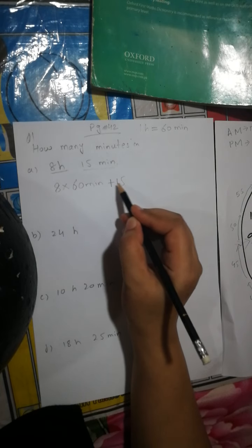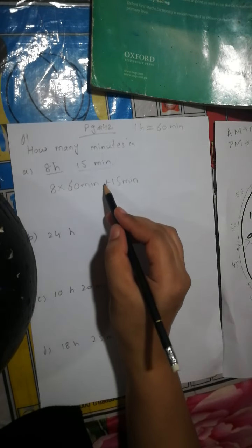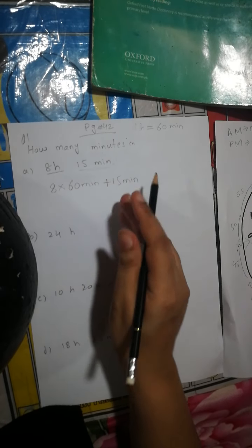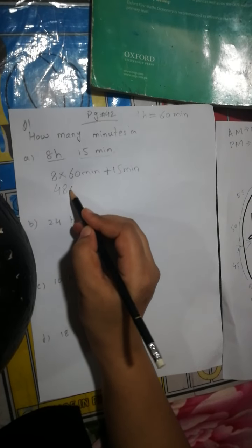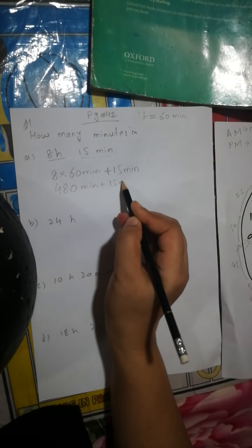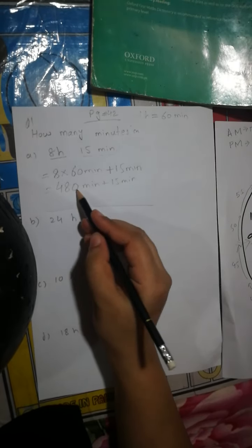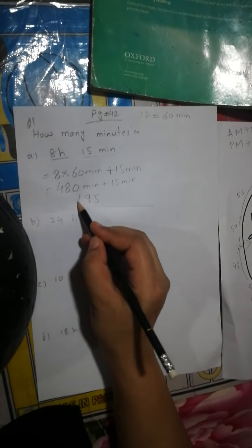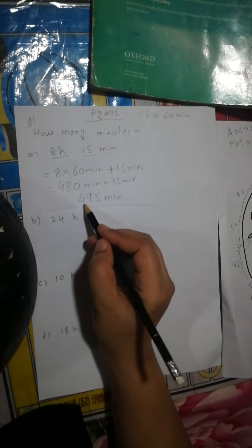We will add the minutes that are already given because we have to tell the total minutes. So 8 × 60 = 480 minutes, plus 15 minutes. Adding: 5 plus 0 is 5, 8 plus 1 is 9, and 4 stays — so 480 plus 15 is equal to 495 minutes.